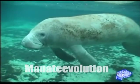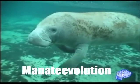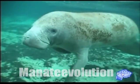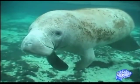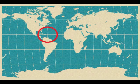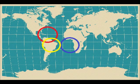The manatee, or Trichicus manatus, is an aquatic mammal that lives in various locations around the world. The three main subspecies of the manatee are the West Indian manatee, the West African manatee, and the Amazonian manatee.